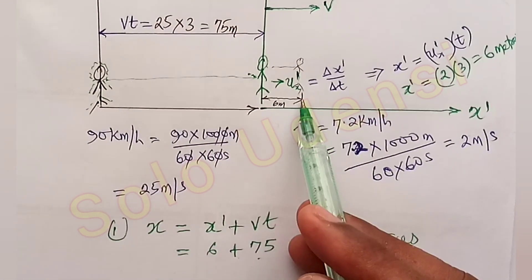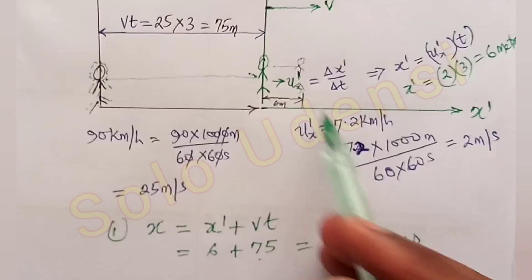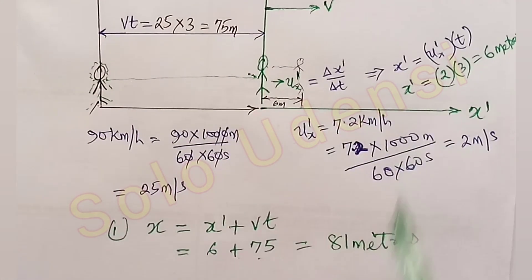So this guy will see this man, the coordinate of him from here is 81 meters. 75 plus 6 is 81.